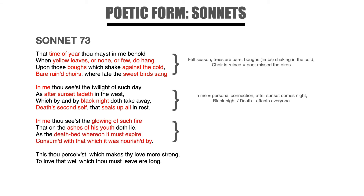Let's read the third stanza: In me thou seest the glowing of such fire, that on the ashes of his youth doth lie, as the deathbed whereon it must expire, consumed with that which it was nourished by. He begins with the same words as the second stanza — 'in me.' We always want to notice repetition because it's something the poet wants to emphasize. He wants us to notice he's making a personal connection. He goes on to paint the imagery that the ashes of his youth are what he is lying upon as a deathbed, which tells us his youth is consumed — it's been used up. His life has been lived, and he feels he's in the fall season, in his time of life just before winter, when many things in nature die.